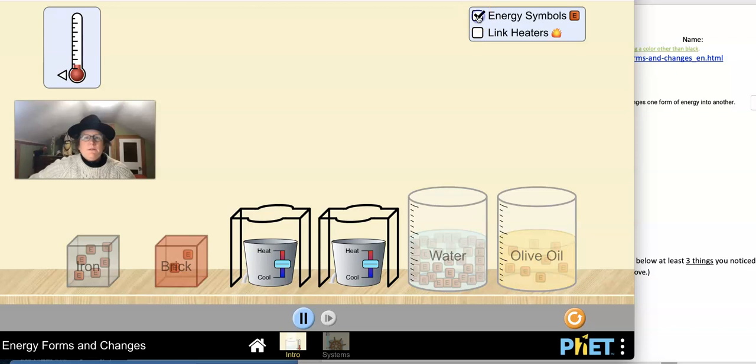The energy symbols here show how much energy is held in that object. We cannot normally see energy, so these symbols help us see the energy. They're not molecules. They're not matter. It's energy that's moving here, and we normally can't see it, but these symbols in the simulation help us see the energy.